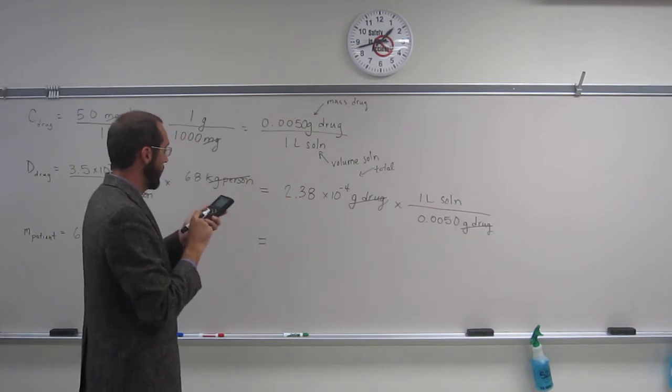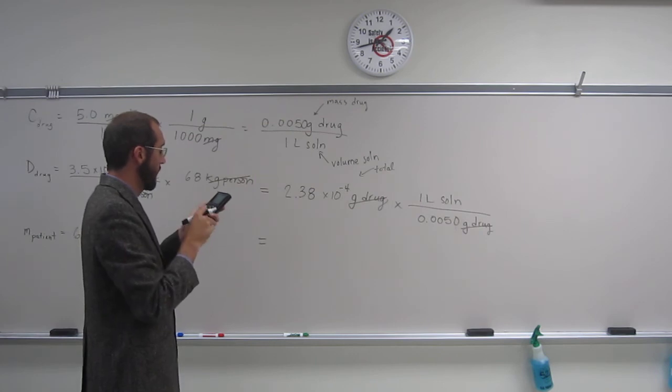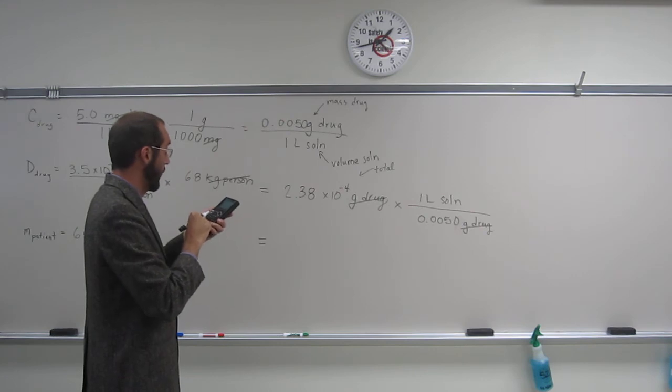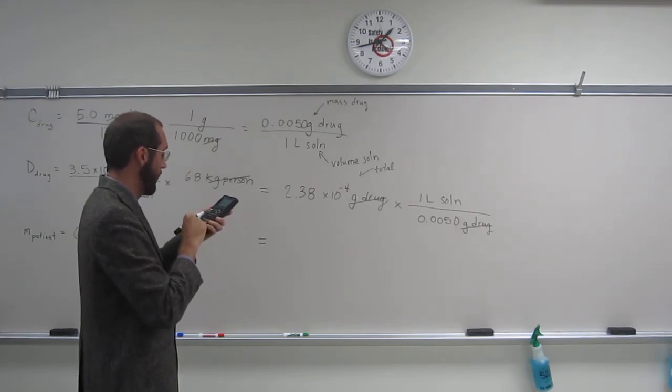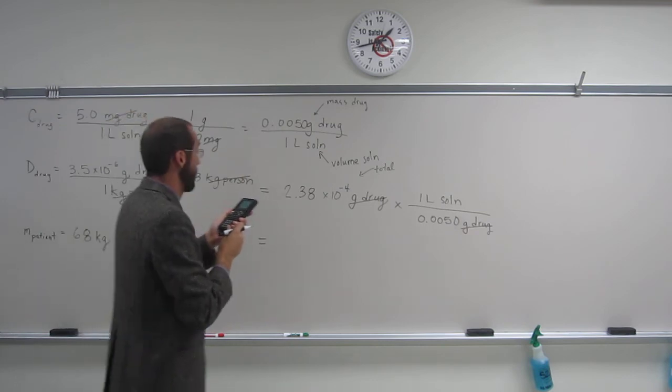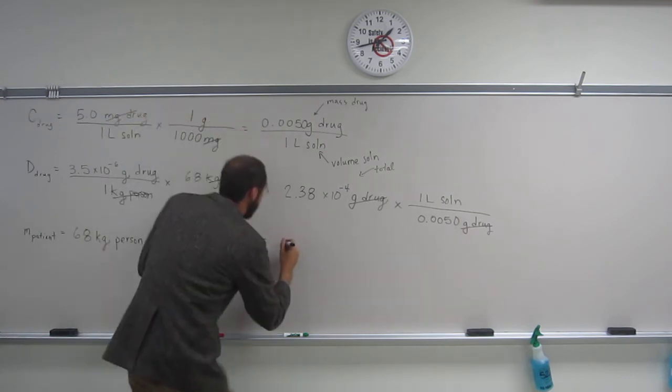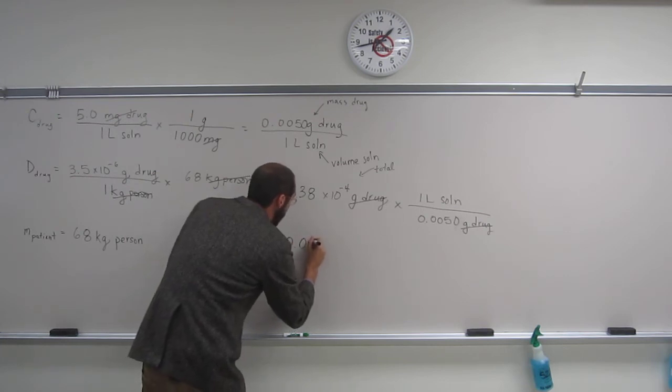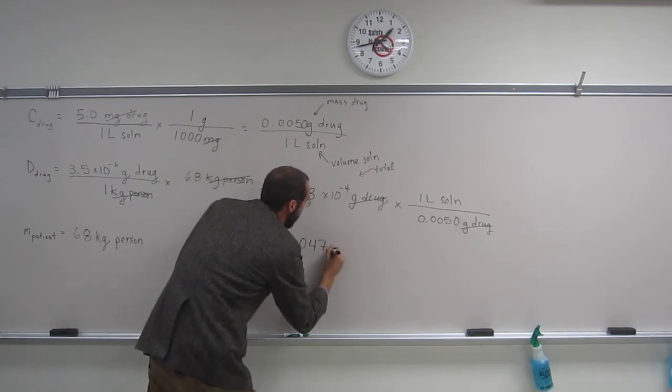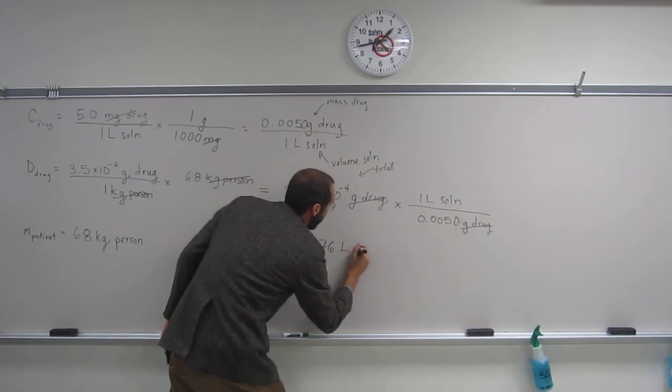So that's going to cancel that. And all we've got to do is take our 2.38 times 10 to the negative 4, sorry, 2.38 times 10 to the negative 4, and divide that by 0.0050. When we do that, we get 0.0476 liters of solution.